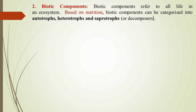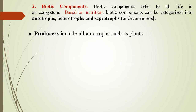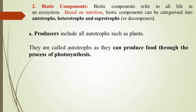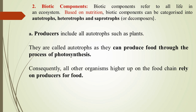Biotic components are the living components of the ecosystem. Based on nutrition, biotic components can be categorized into autotrophs, heterotrophs, and saprotrophs. Autotrophs are the producers — all plants. They are called autotrophs because they can produce food themselves through photosynthesis and don't require others for food making. Consequently, all other organisms higher up on the food chain rely on these autotrophs, as they are the primary producers of food.